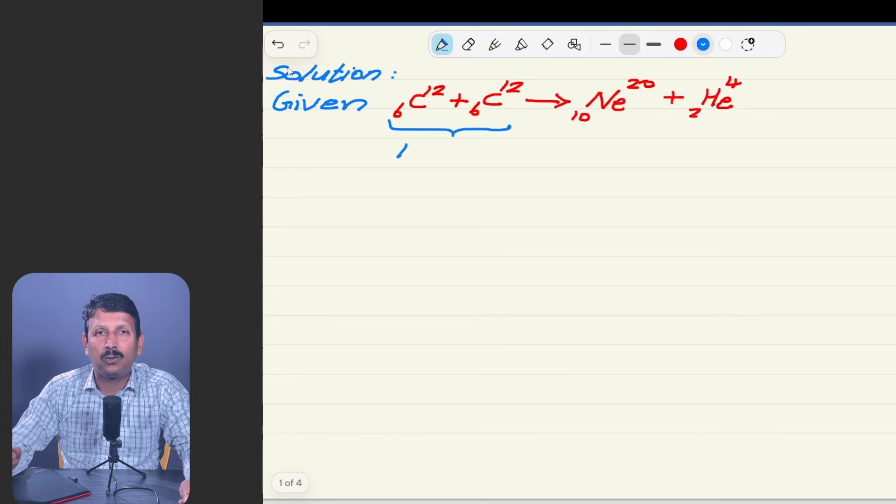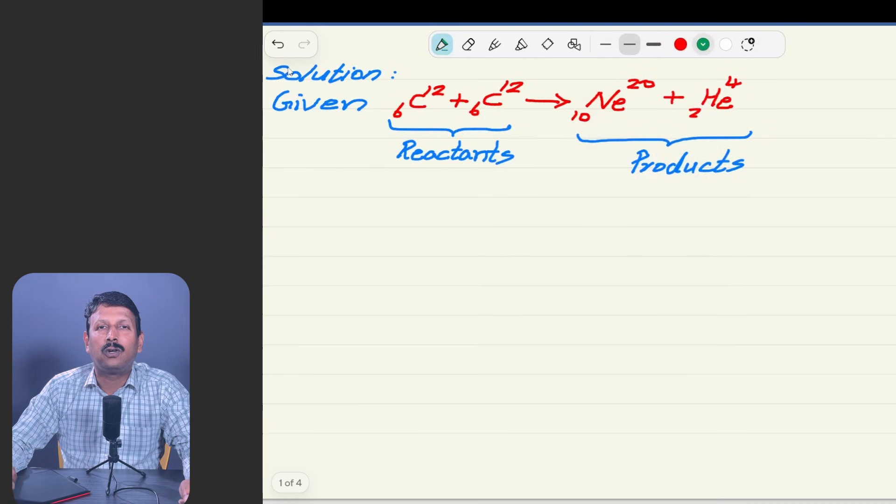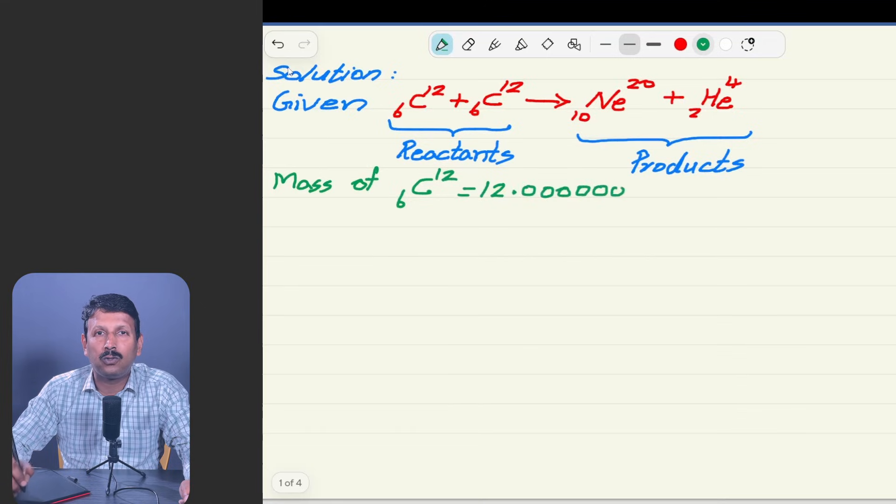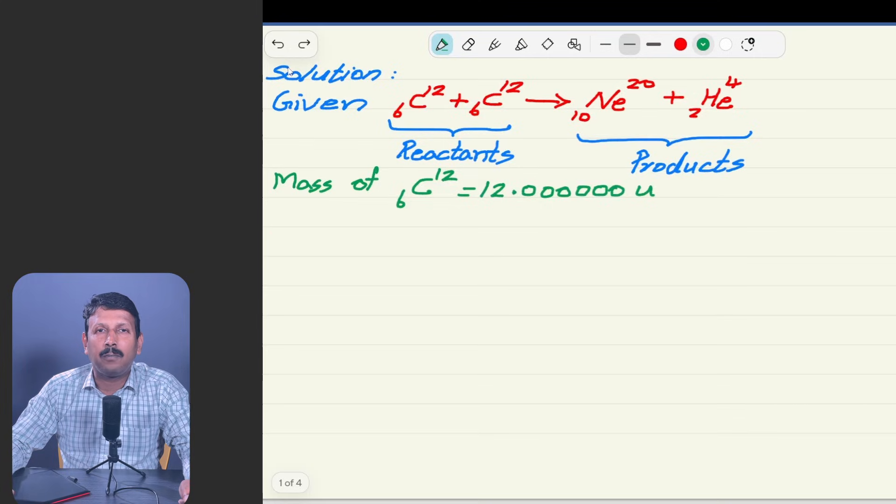What we want to do is we want to do the calculation for masses of the reactants and masses of the products. So, left side is the reactants and right side is the products. Based on the data given we will do the calculation. In the question it was given that mass of C₁₂⁶ is equal to 12 atomic mass units. And you know that AMU is the straightforward value for C₁₂⁶.